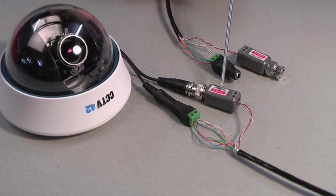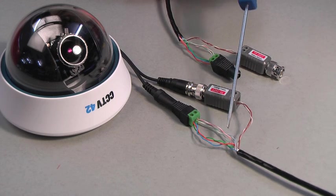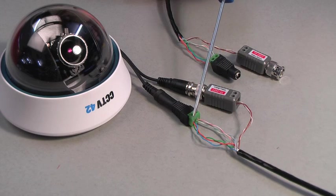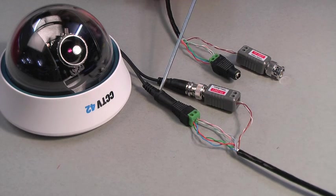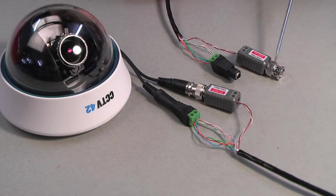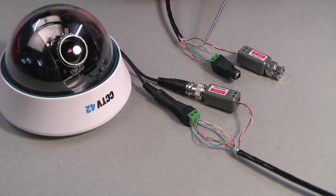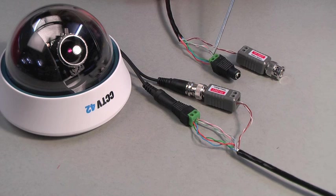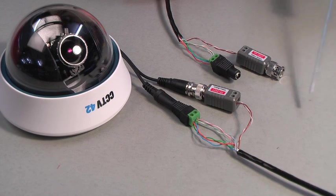Another option is to use the Cat5 cable to supply the DC power. Where you do this we always recommend you combine up the remaining three pairs of the Cat5 cable so as to reduce the voltage drop. You can see we've used our screw in plugs and screw in sockets to terminate the Cat5 cable for the DC power.